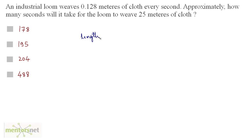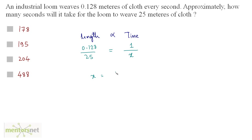We have the length of cloth woven and the time taken, and length is directly proportional to time. In one case we have 0.128 meters taking one second. We need to find approximately how many seconds it takes to weave 25 meters. Taking the ratio and equating, x equals 1 times 25 divided by 0.128, which equals 25,000 divided by 128, giving approximately 195 seconds. So the approximate time to weave 25 meters is 195 seconds.